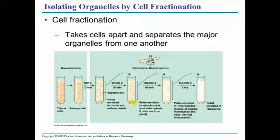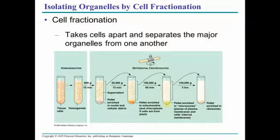Otherwise you remove it and spin it again for longer and at a faster speed. Here we have mitochondria and chloroplasts down at the bottom. We can remove those or discard them. Then we get into smaller pieces — microsomes and various other tiny pieces of plasma membrane and so on. And then finally you can get ribosomes, the smallest of all the organelles.